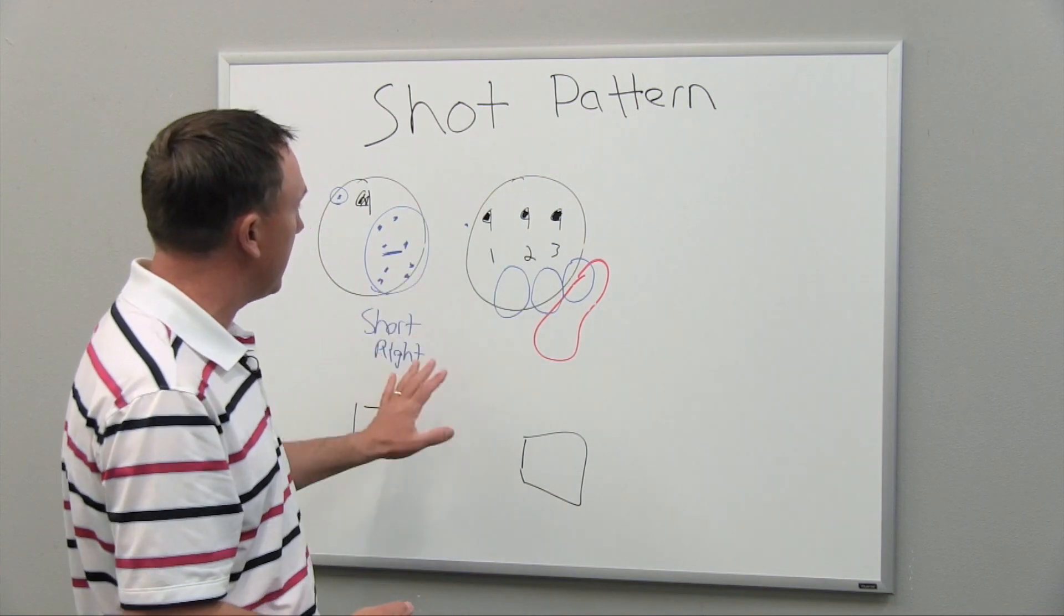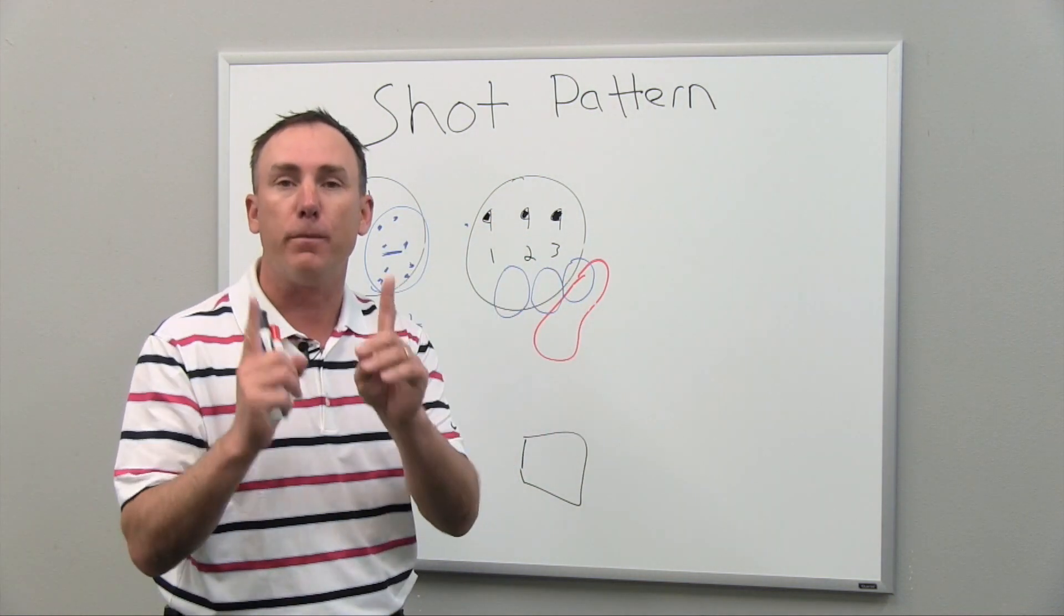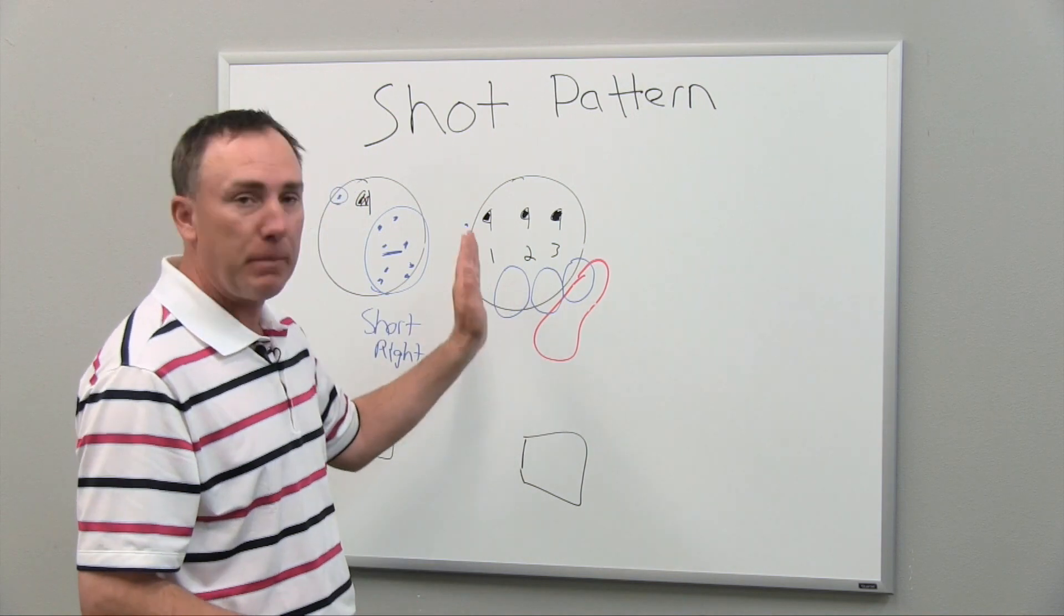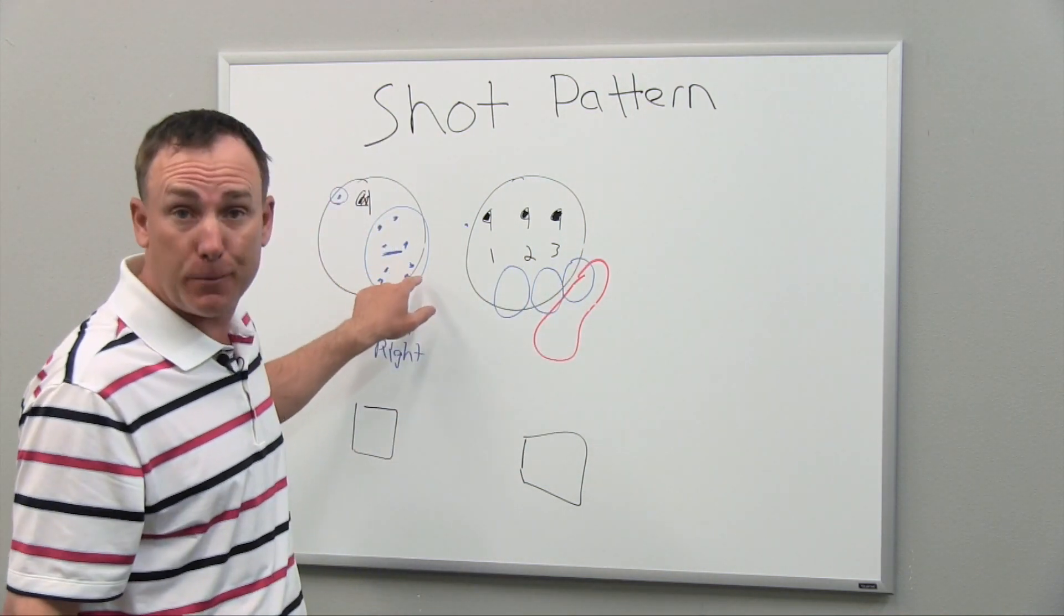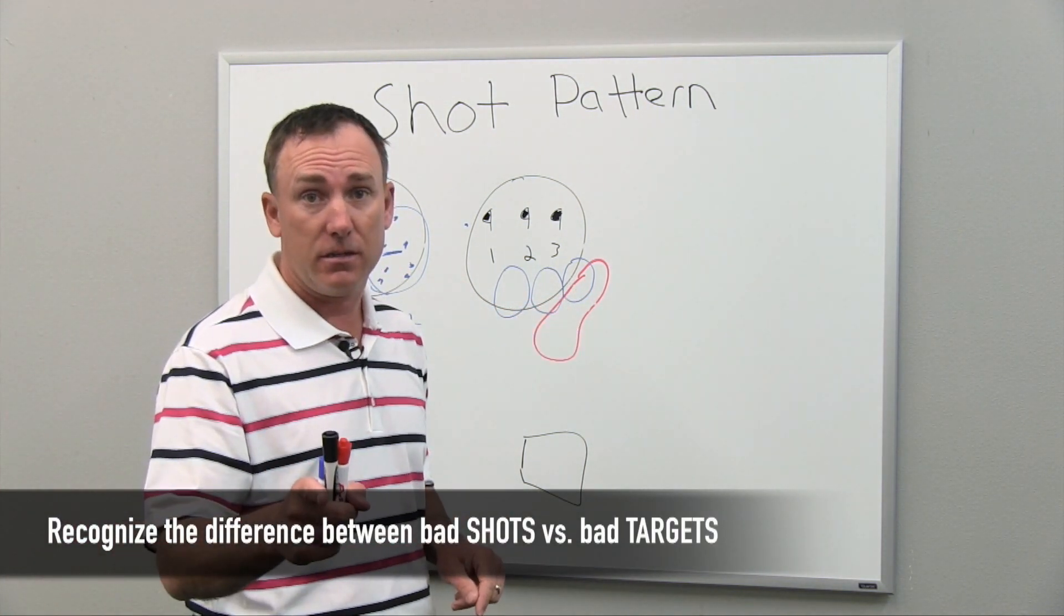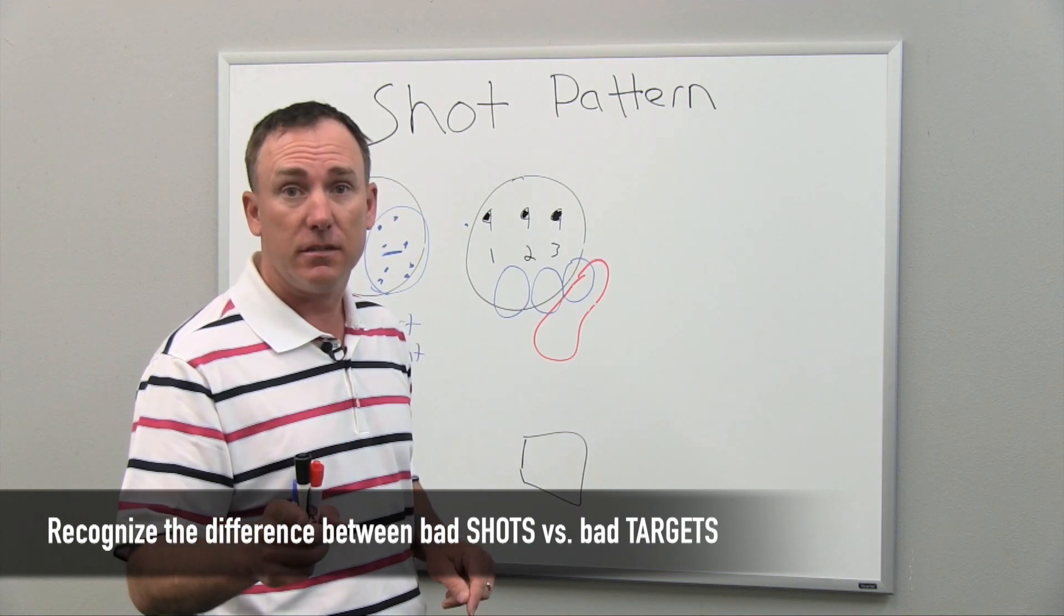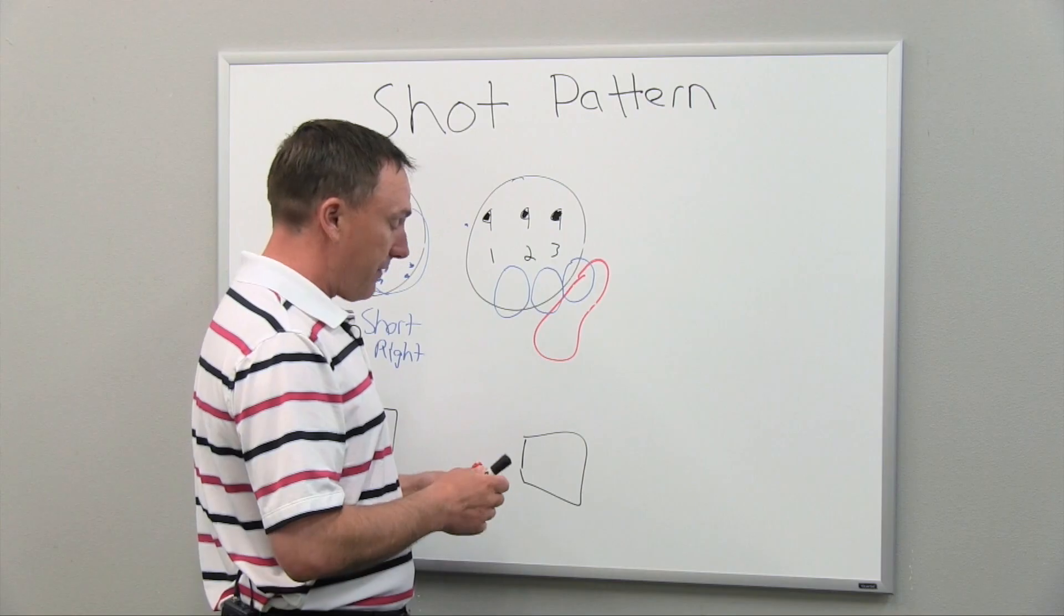The takeaway from this is, of course, to understand where your pattern is at and more importantly, understand how to pick the appropriate target based on that pattern. Because if you're hitting shots within your pattern and they're finishing in the bunker, it's not your golf swing, it's your target. You can change that very simply. Now let's take it a step further.